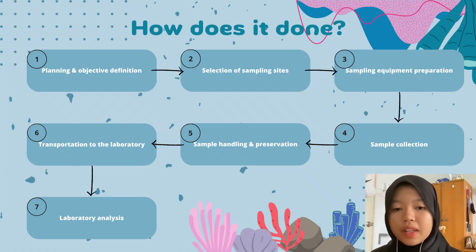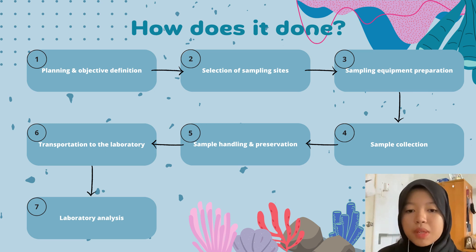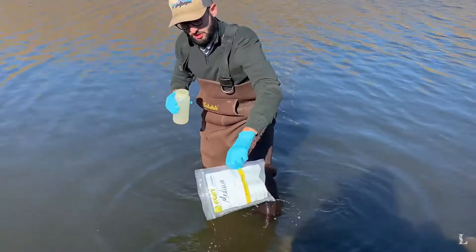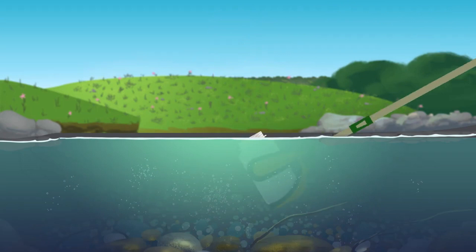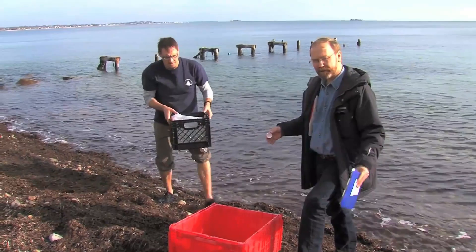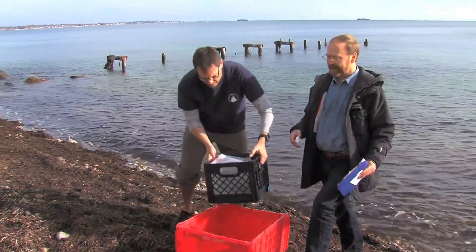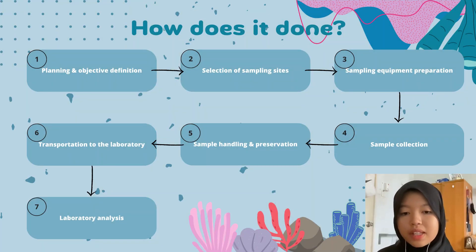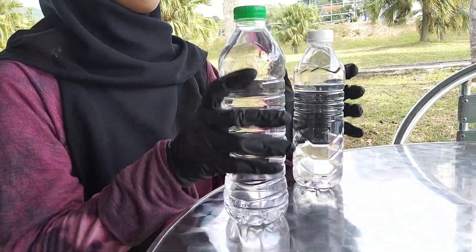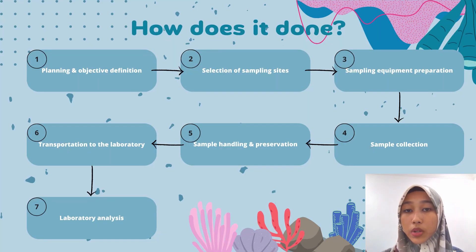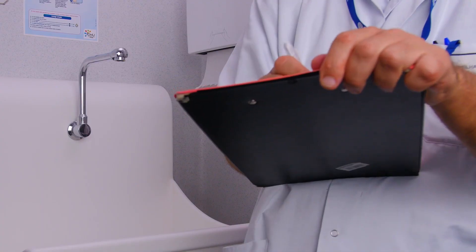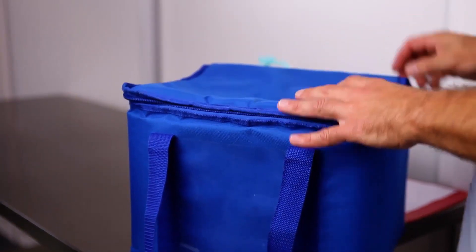Number five is sample handling and preservation. Depending on the parameters being tested and the laboratory analysis methods, water samples may require specific handling and preservation. For instance, some parameters may require samples to be kept at specific temperatures or treated with preservatives to prevent degradation or changes before analysis. After the samples have been collected, water samples must be transported to the laboratory as quickly as possible to avoid any changes in the water's characteristics. Proper labeling, documentation, and secure packaging are crucial during transportation.